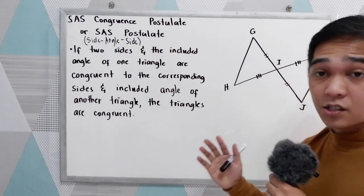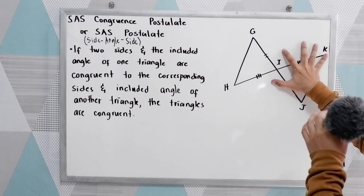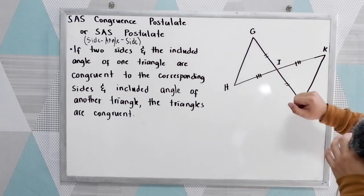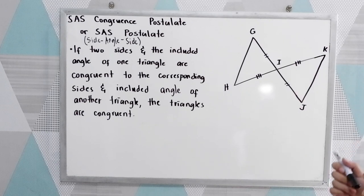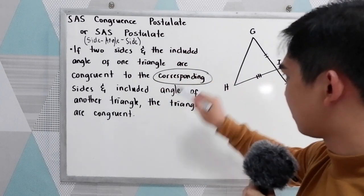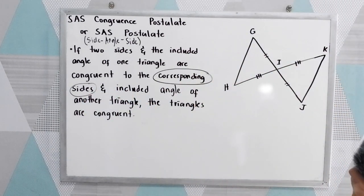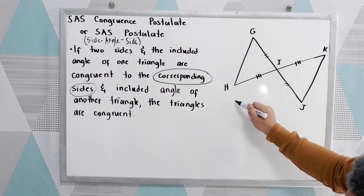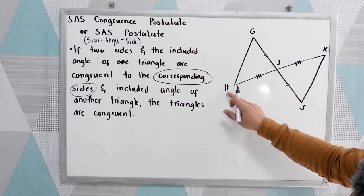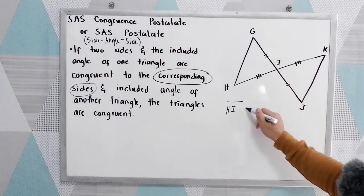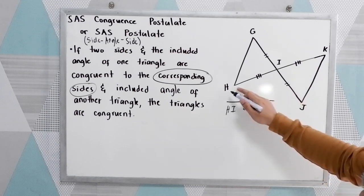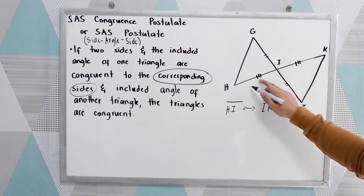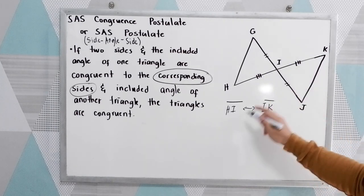Now, to better understand, let's have this illustration. We have triangle HGI and triangle IJK — two triangles. Now let us find first the corresponding sides. We have our markings. Following our markings, we have HI corresponds to IK. The three markings indicate that they are congruent or correspond to each other.